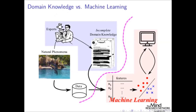One of the most important characteristics of this traditional way of machine learning is that there is a clear separation between the domain knowledge and the actual machine learning. Only when the domain experts filter the data does the machine learning come in. That's the traditional way of doing machine learning.